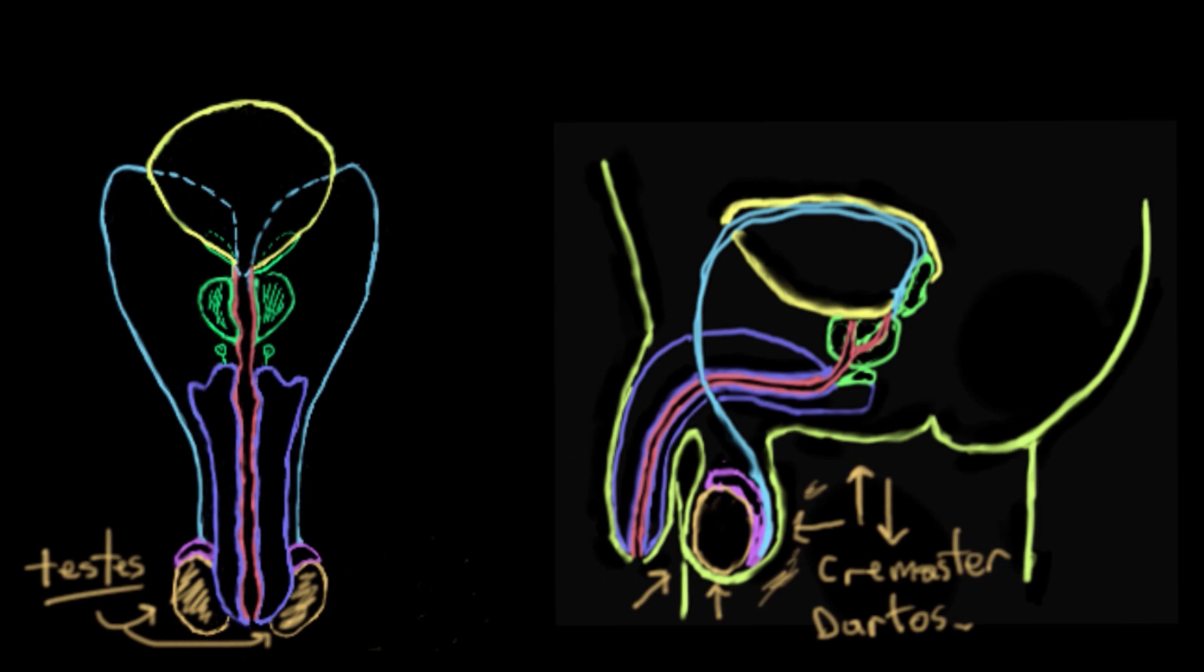Next up, what we have is the epididymis. Those sit right on top of the testes on either side. The role of the epididymis is to provide a place for the sperm to hang out and develop.